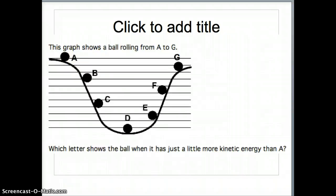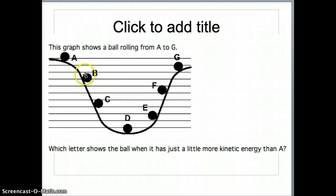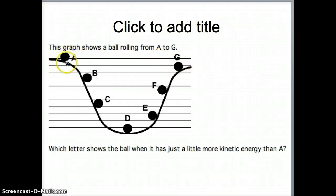Least kinetic energy would be up at letter A — that's its slowest point. And for a question like 'just a little bit more kinetic than A,' you might want to say B, and you'd be kind of right, but the best answer is G. Because at G it's getting faster and faster coming down, then slowing down on the way up — so right there it's its slowest on that side, and here it's just a little bit faster than A because it's a little bit lower.